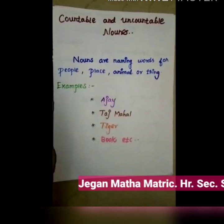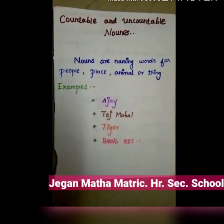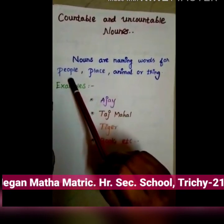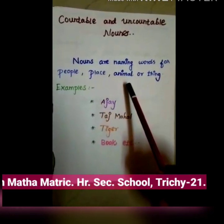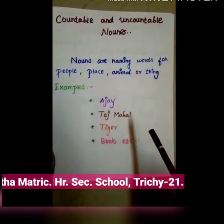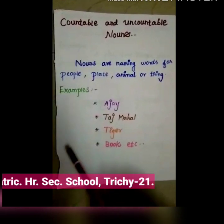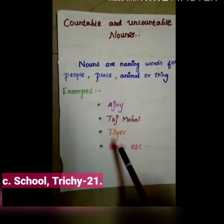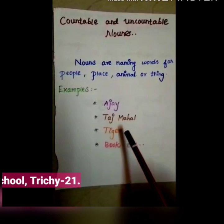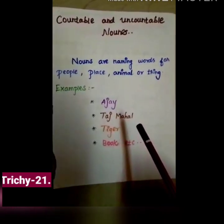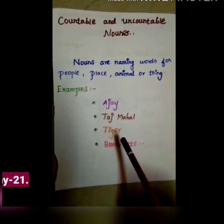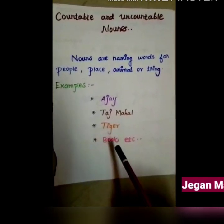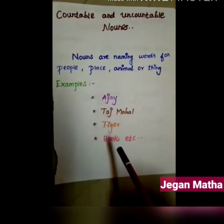Children, do you know what nouns are? Nouns are naming words for people, place, animal, or thing. For example: Ajay is the name of a person. Taj Mahal is the name of a place. Tiger is the name of an animal. Book is the name of a thing.